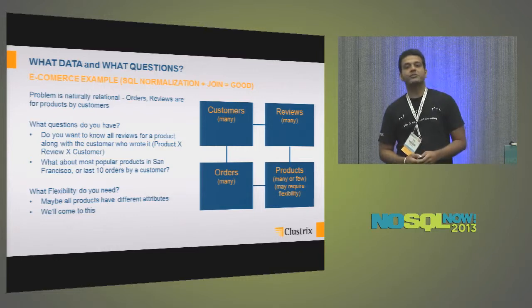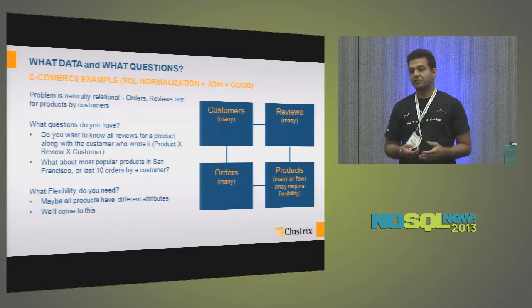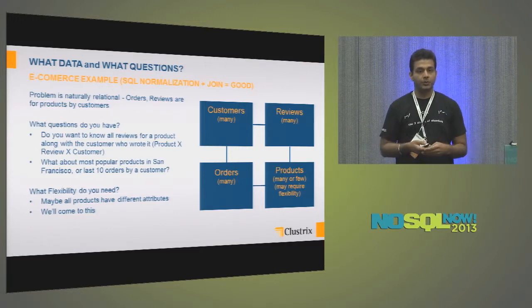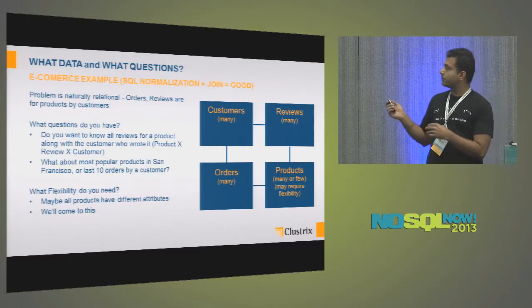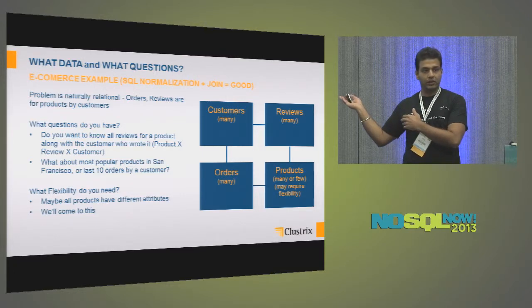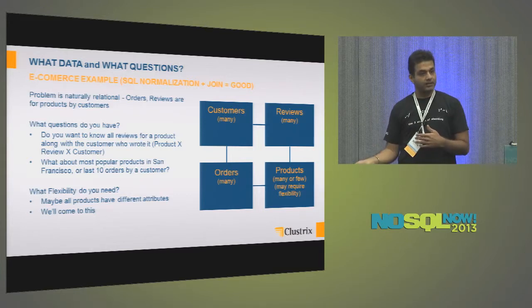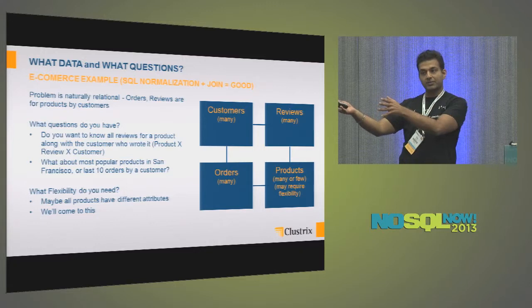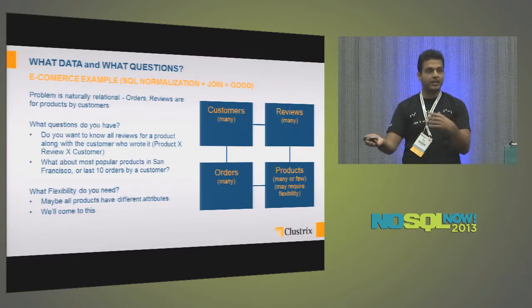The second thing is rules of thumb. The question is: which tool are you going to pick? First, what data do you want to store, and what questions do you want to ask? The world is kind of relational for the most part. You have customers in e-commerce who place orders for products. Customers then write reviews for products. When you pull up products, you want to look at the reviews and the customers who wrote them — that's a natural join. A lot of your data is naturally relational, and in things like orders, all the orders are going to look pretty much the same. So relational makes a lot of sense.